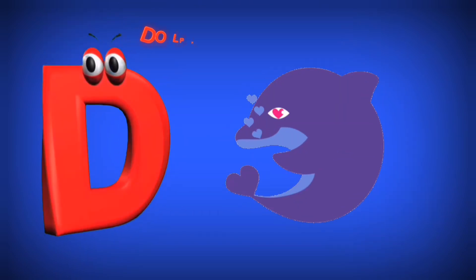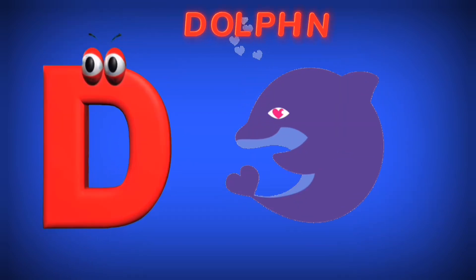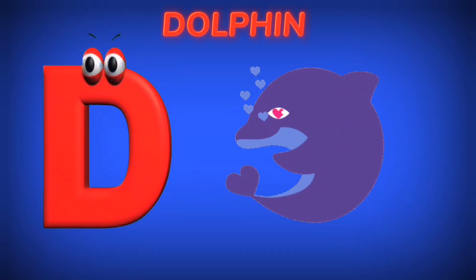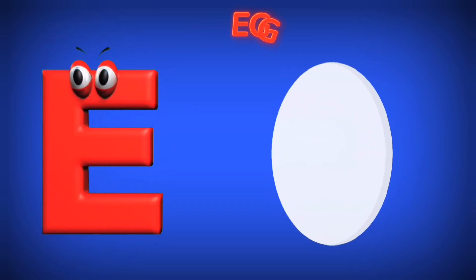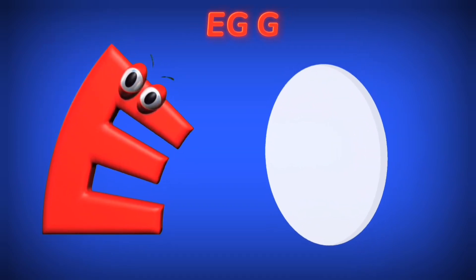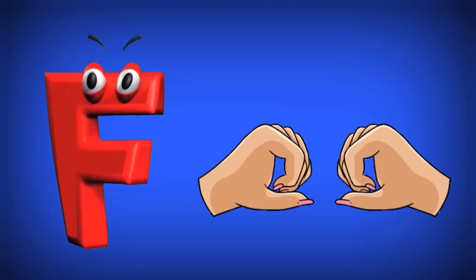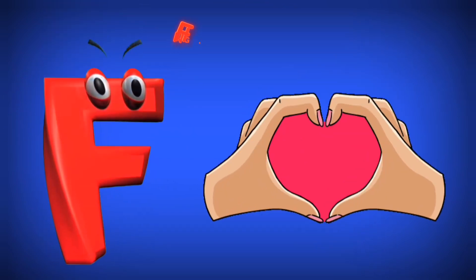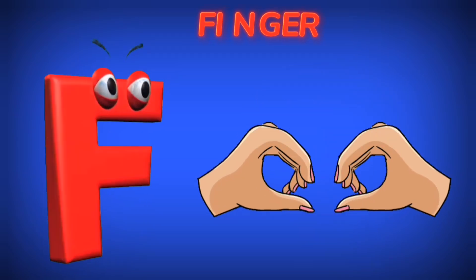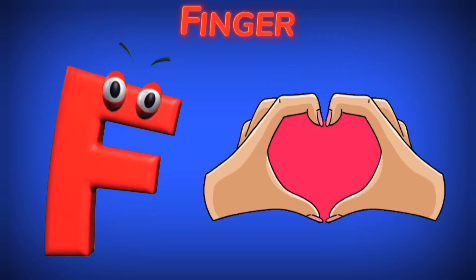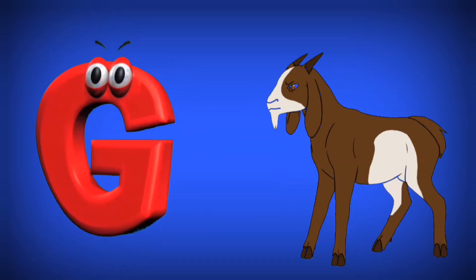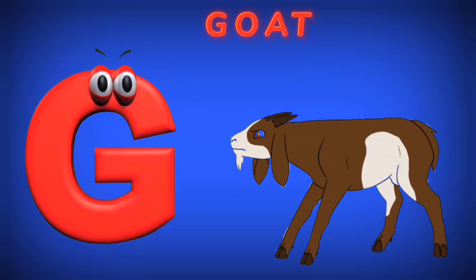D is for Dolphin. D. Dolphin. E is for Egg. E. Egg. F is for Finger. F. Finger.